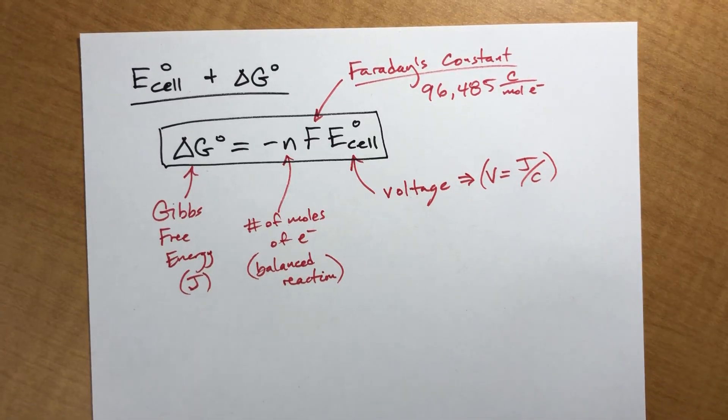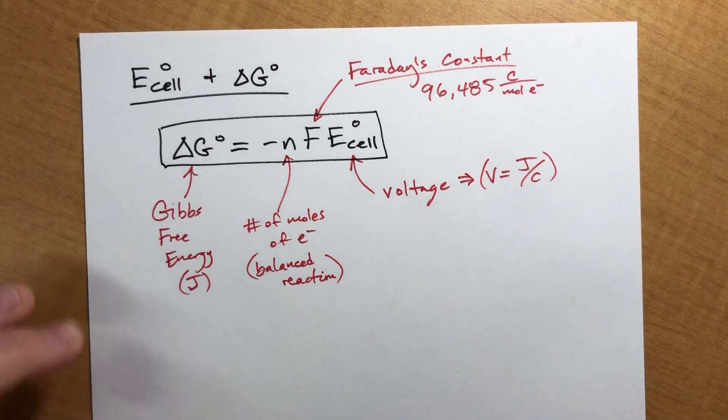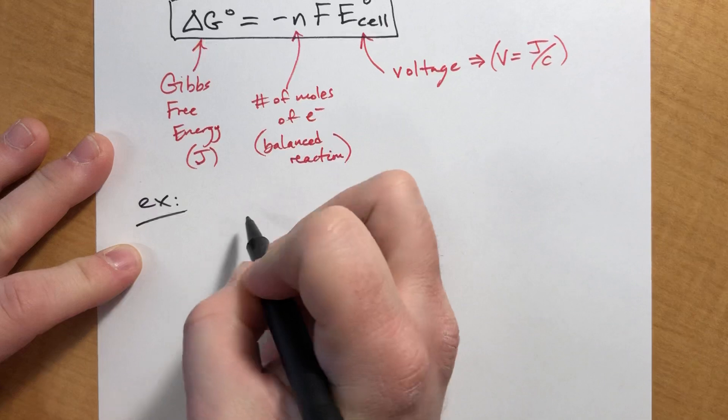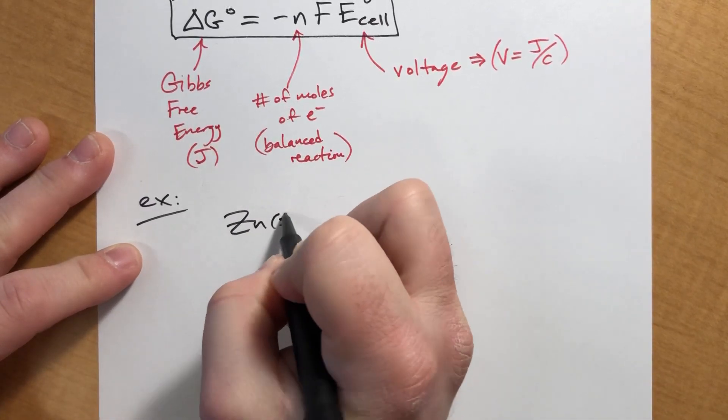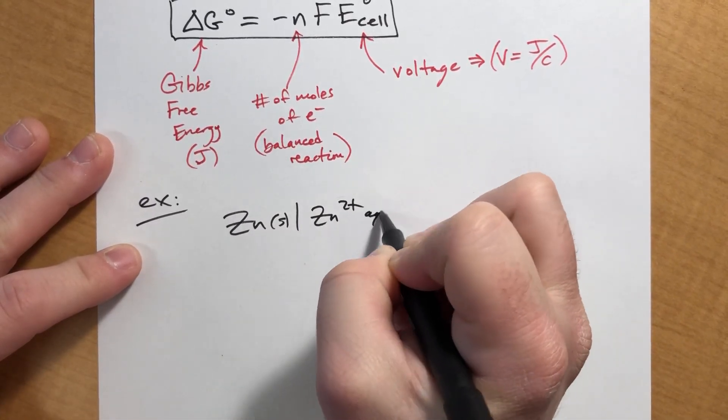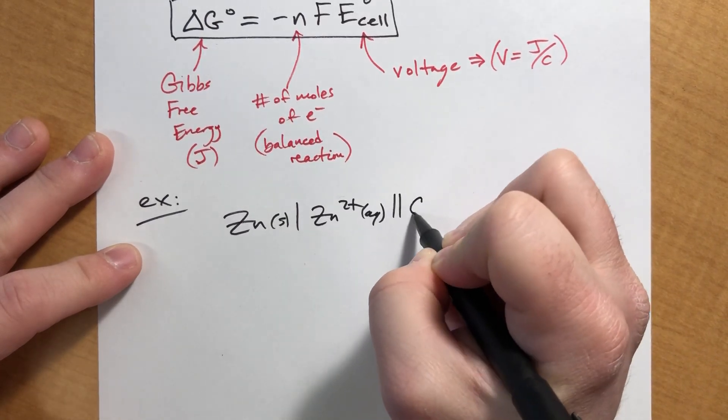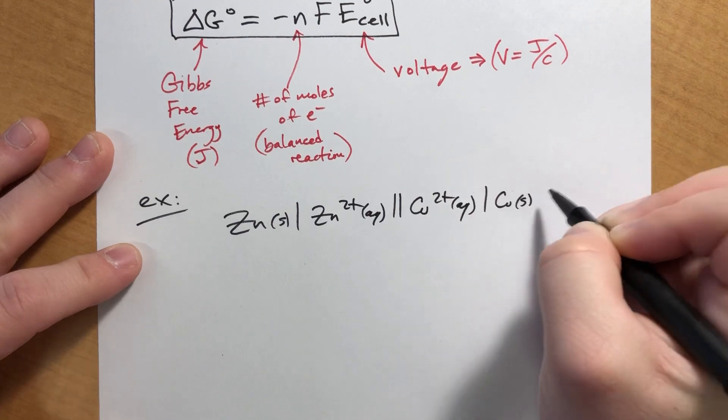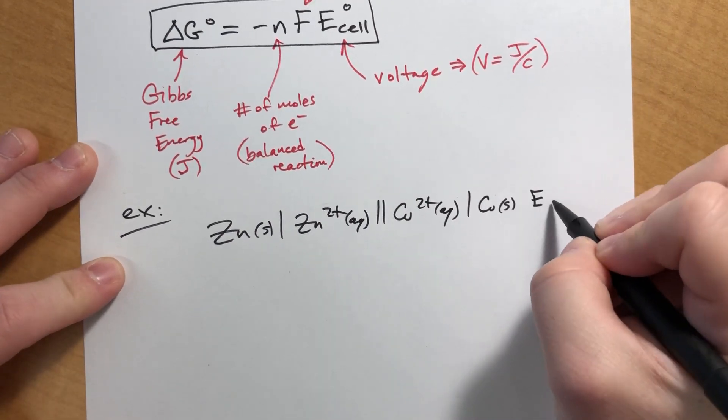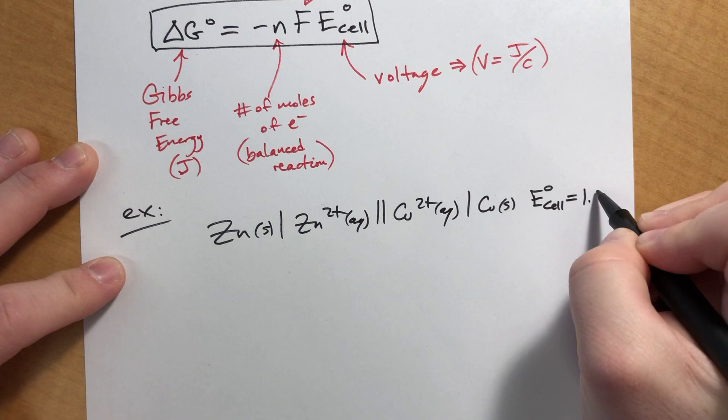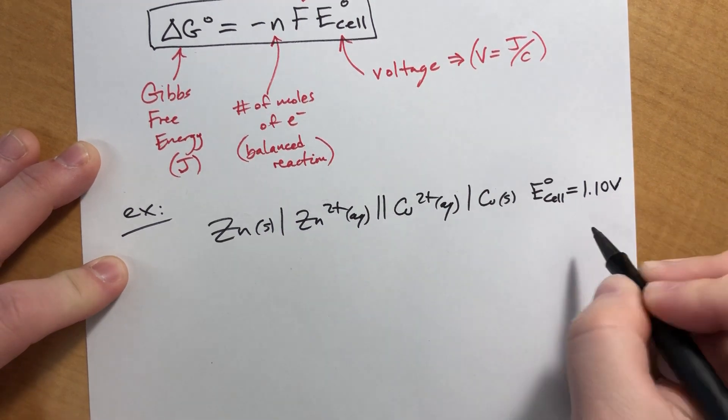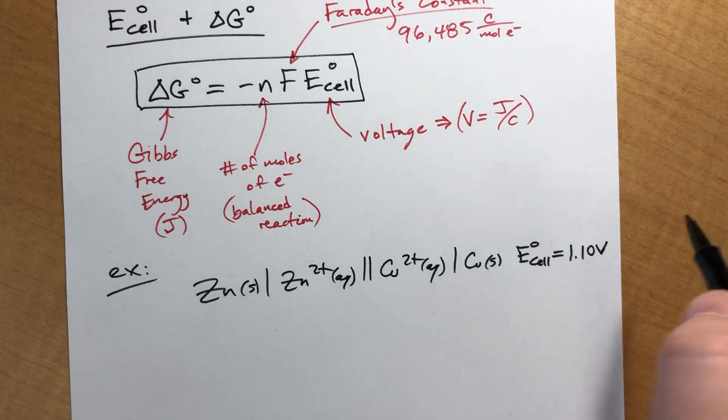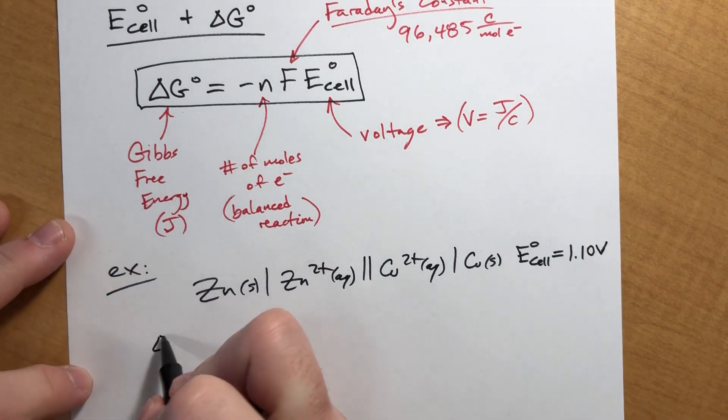So let's try that same example that we keep doing over and over again. So zinc solid, zinc two plus aqueous, copper solid. And we said in the last video that the cell potential for this at standard conditions is 1.10 volts. It's a positive value. It's got a positive voltage. We want to know what's delta G.